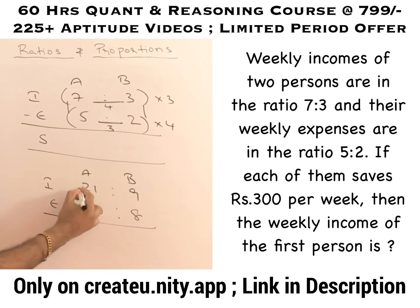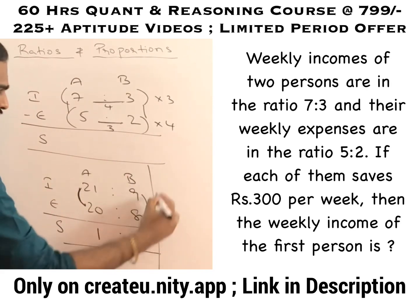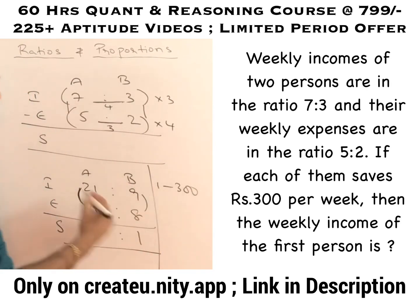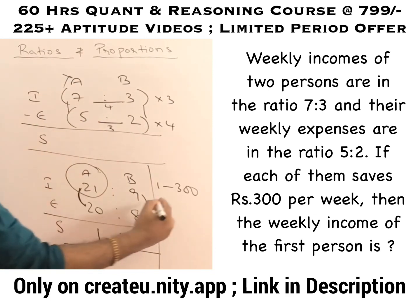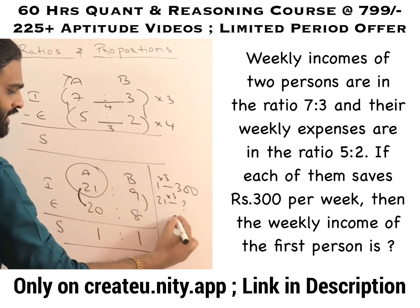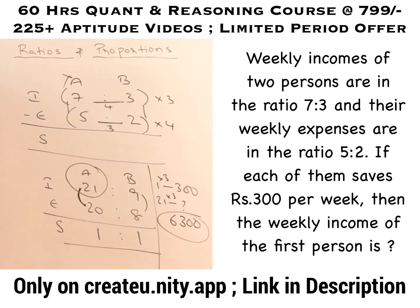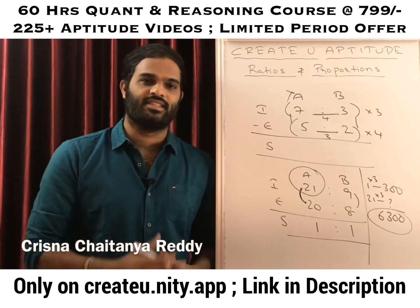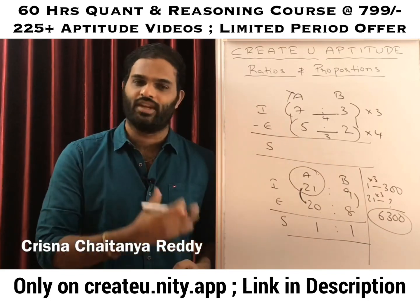Now the differences are equal. The difference between 21 and 20 is 1, and between 9 and 8 is 1 — that is the saving, so saving equals 1 part. That 1 part is given as 300 rupees. The income of A is now 21 parts: 21 into 300 is 6,300 rupees. So the answer for this question is 6,300 rupees. This is how we will do it every time such a question is asked.